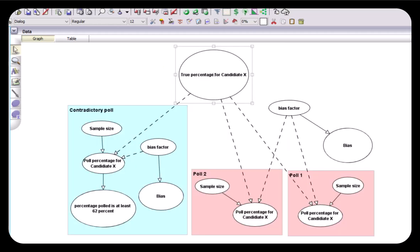Now we're going to move to a model where we've effectively put three of those models together to model the situation where we've got three polls. Two polls which are assumed to use the same method, therefore if there's any bias it will be common to them, and a contradictory poll which if there's any bias it's not necessarily the same bias as in these polls. These are just copies of the same single model I showed before. You can see that all of them are trying to learn the same common true percentage for candidate X.